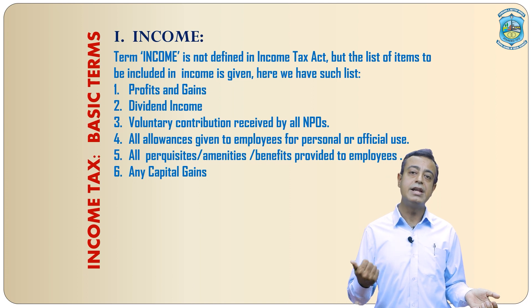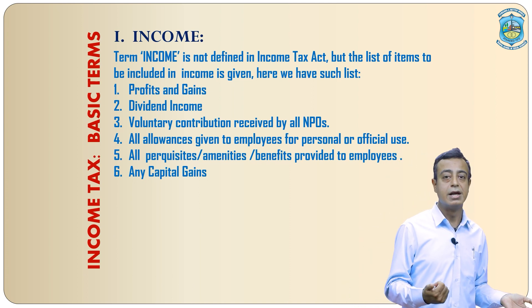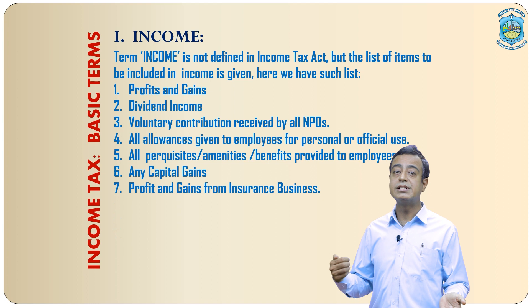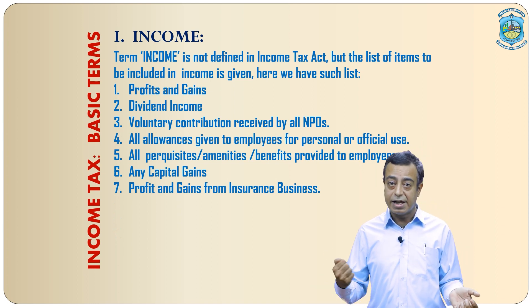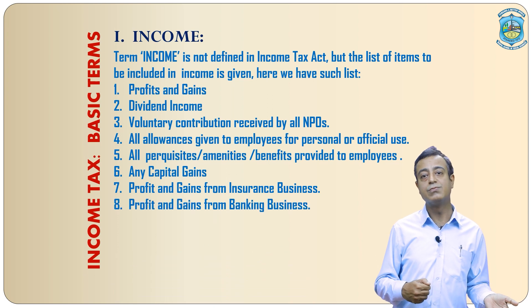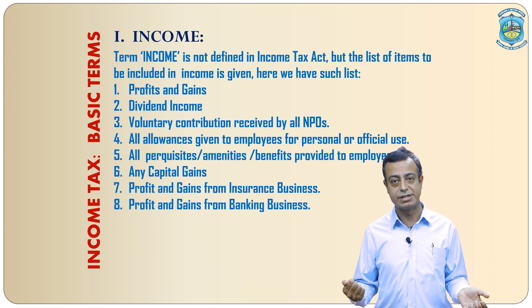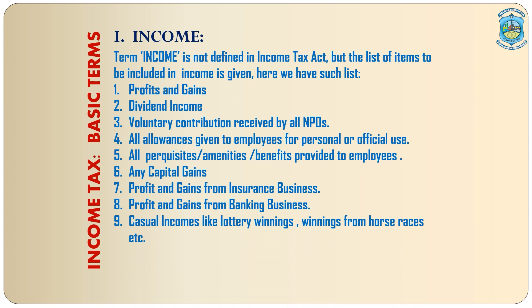Next, any type of capital gain. Next, profits and gains arising from insurance business. Next, profits and gains from banking business. Next, all types of casual incomes such as lottery winnings, horse racing, gambling, and betting are also part of income. And lastly, contributions made by the employer to the provident fund of the employee is also part of the list of income.